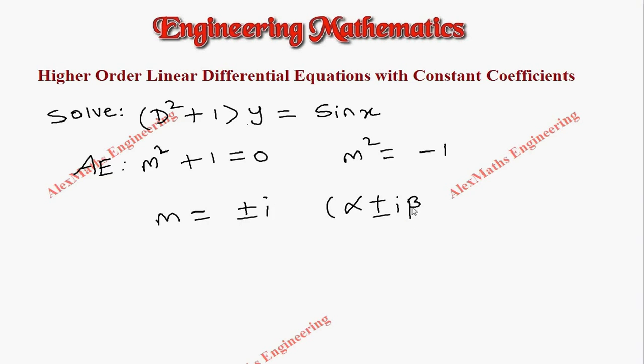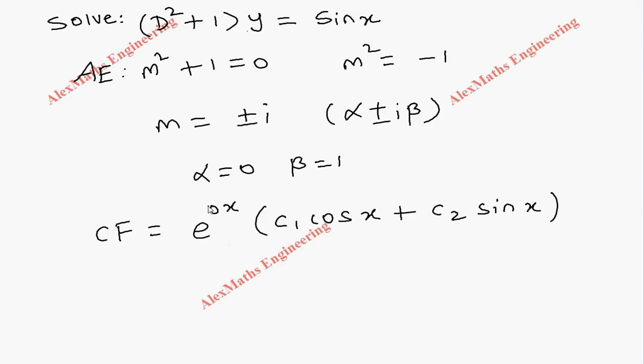As per the procedure, the complementary function is e^(αx) · (c₁ cos βx + c₂ sin βx). Since α = 0, the first term becomes 1, and the rest of the terms give us c₁ cos x + c₂ sin x.